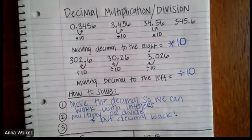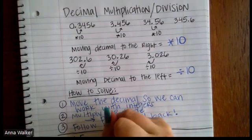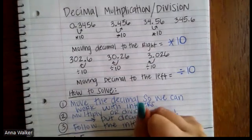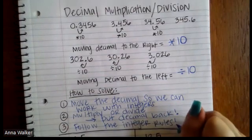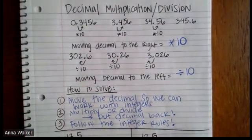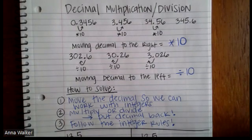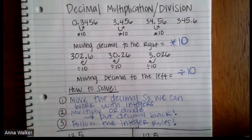And then the third step is we are going to make sure, as always, we follow the integer rules. Follow the integer rules. Always, always, always. So this is our three-step process: moving the decimal so that way we can work with integers or whole numbers, multiply or divide our numbers, make sure we put the decimal back in our answer, and then make sure when we were doing the multiplication or division, we are following the integer rules.